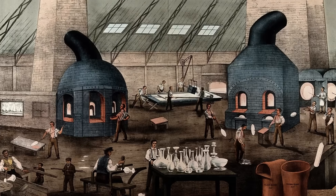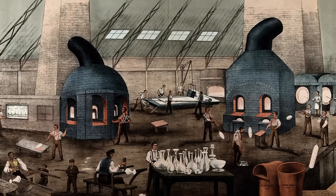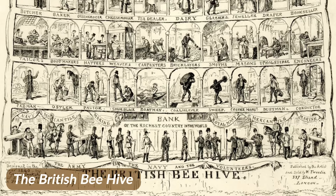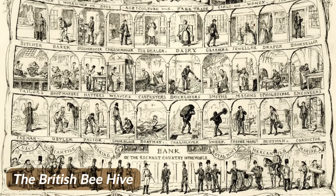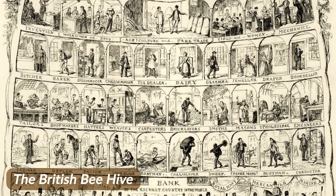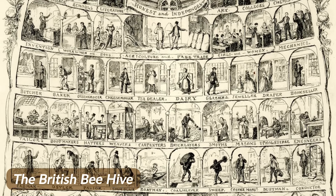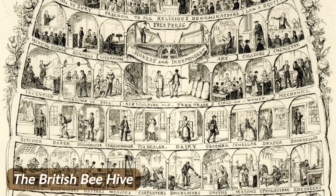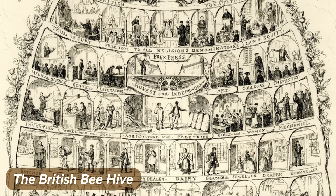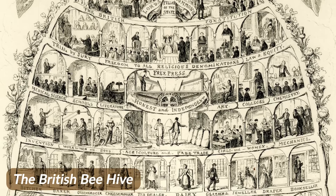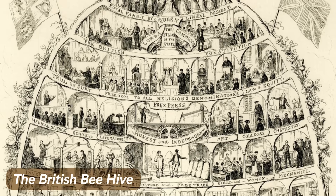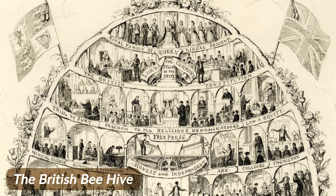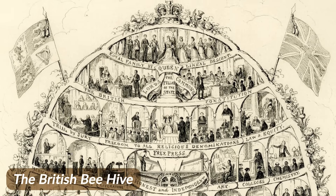Industrialization also changed the social order of society, with new social classes emerging that were based on wealth. Before the Industrial Revolution there were different social classes, but the Industrial Revolution saw the rise of the middle class, as people were able to move up the social ladder for the first time. All of this was due to new jobs and opportunities that were created with the rise of factories and large-scale industries.